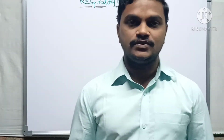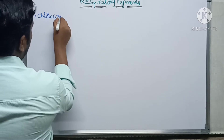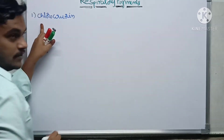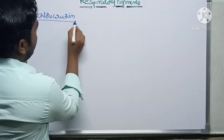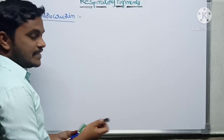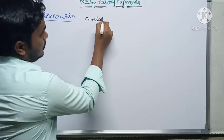Hi students, in this video we are going to discuss respiratory pigments. So hemoglobin and we will cover some other respiratory pigments. We will take their characteristics. The first two respiratory pigments, and then chlorocruorin. Chlorocruorin is the respiratory pigment which is present in annelids.